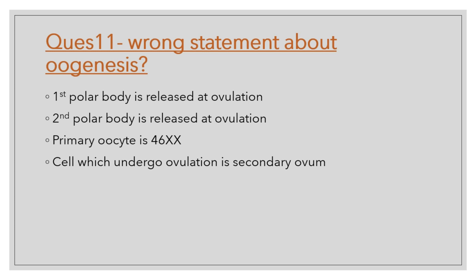Question number 11: What is the wrong statement about oogenesis? Options include: first polar body is released at ovulation; second polar body is released at ovulation; primary oocyte is 46XX; cell which undergoes ovulation is secondary oocyte. The wrong statement is that the second polar body is released at ovulation — that is incorrect. The second polar body is only released at the time of fertilization, when the secondary oocyte is converted into the fertilized egg.